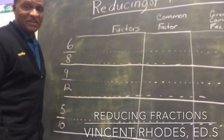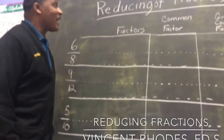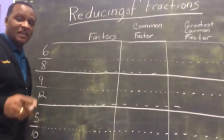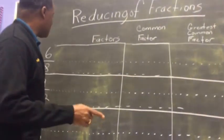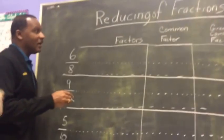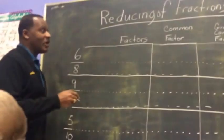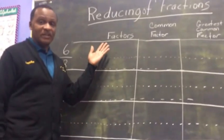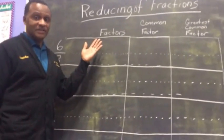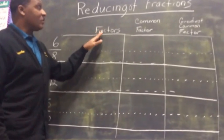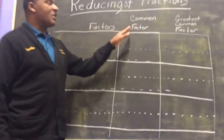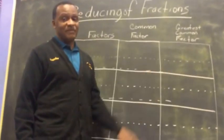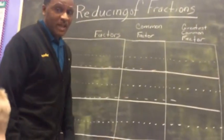What we're going to do is talk about reducing fractions. We're going to start with three things that we need to know about fractions: what the factors are, what the common factors are, and what the greatest common factor is.